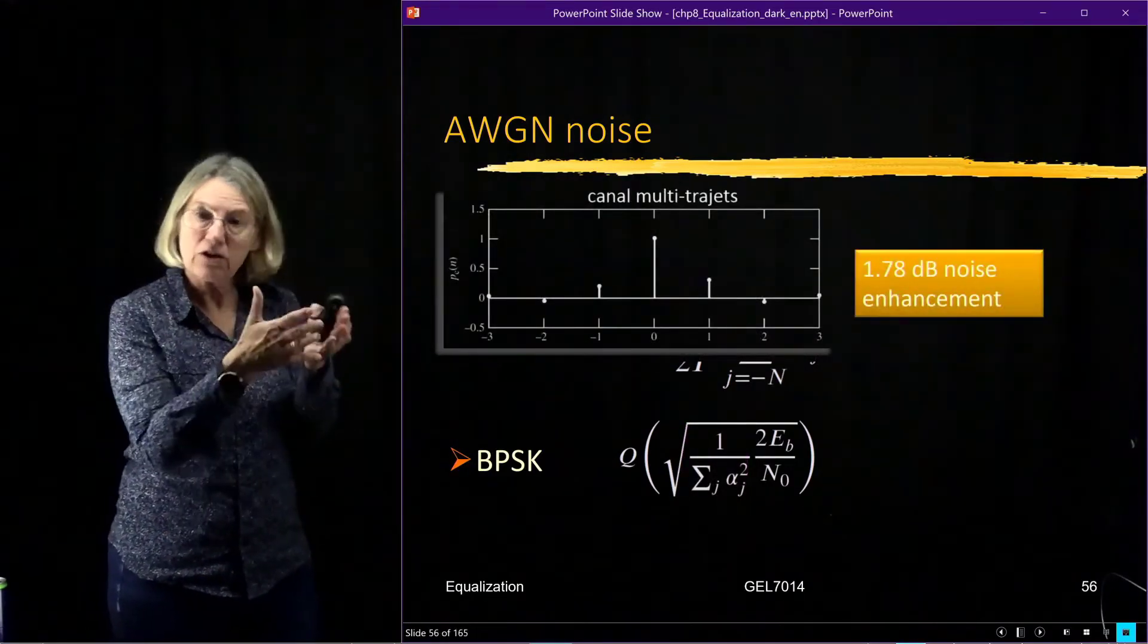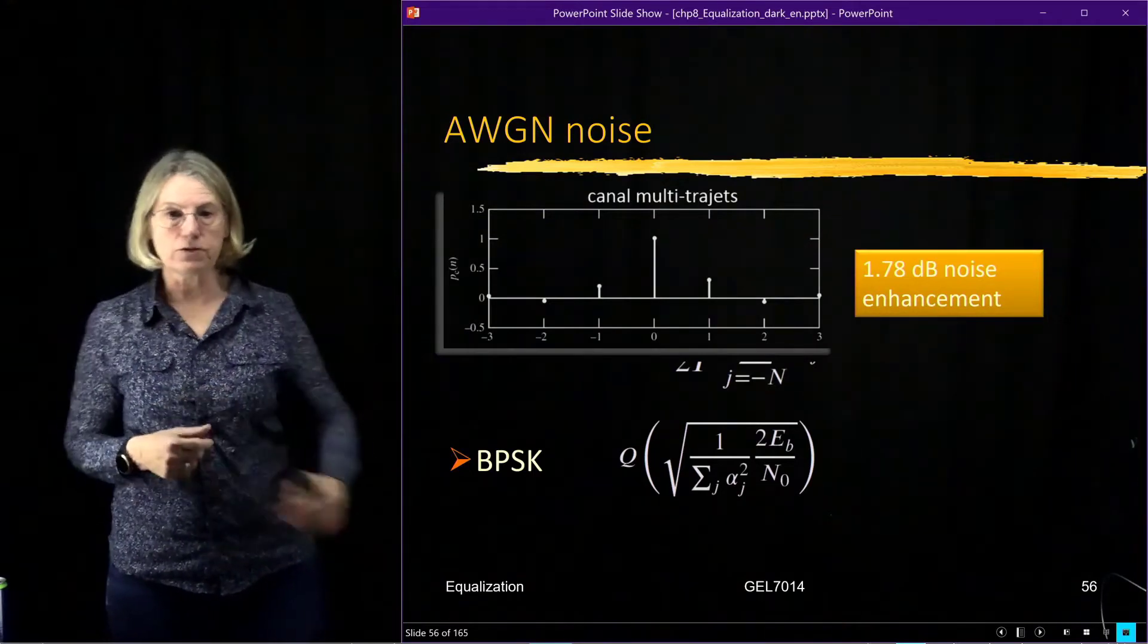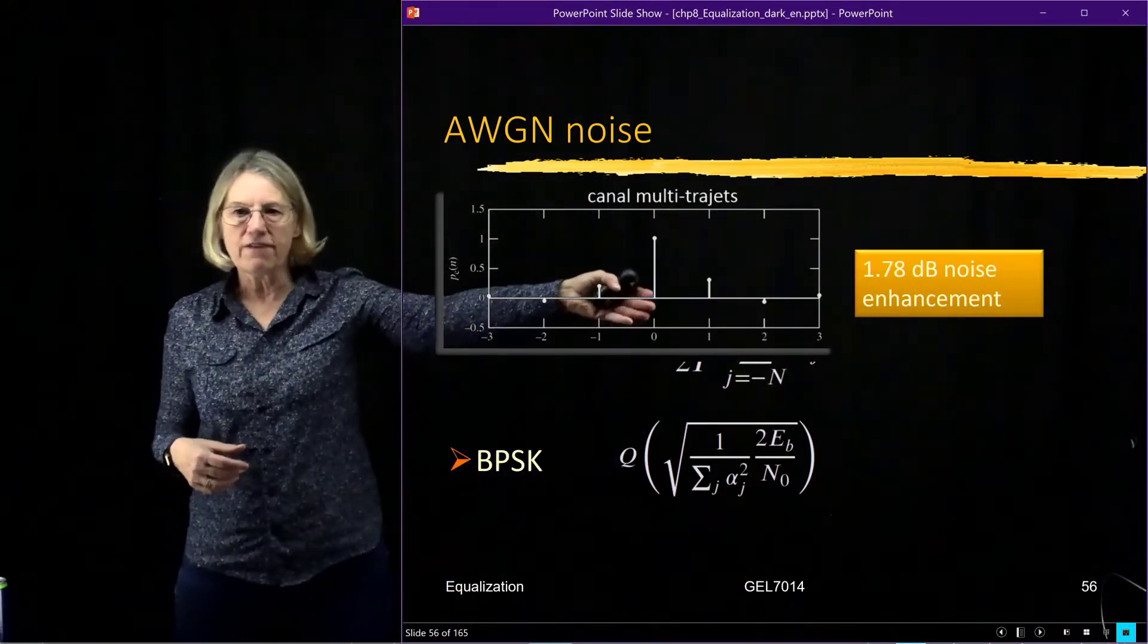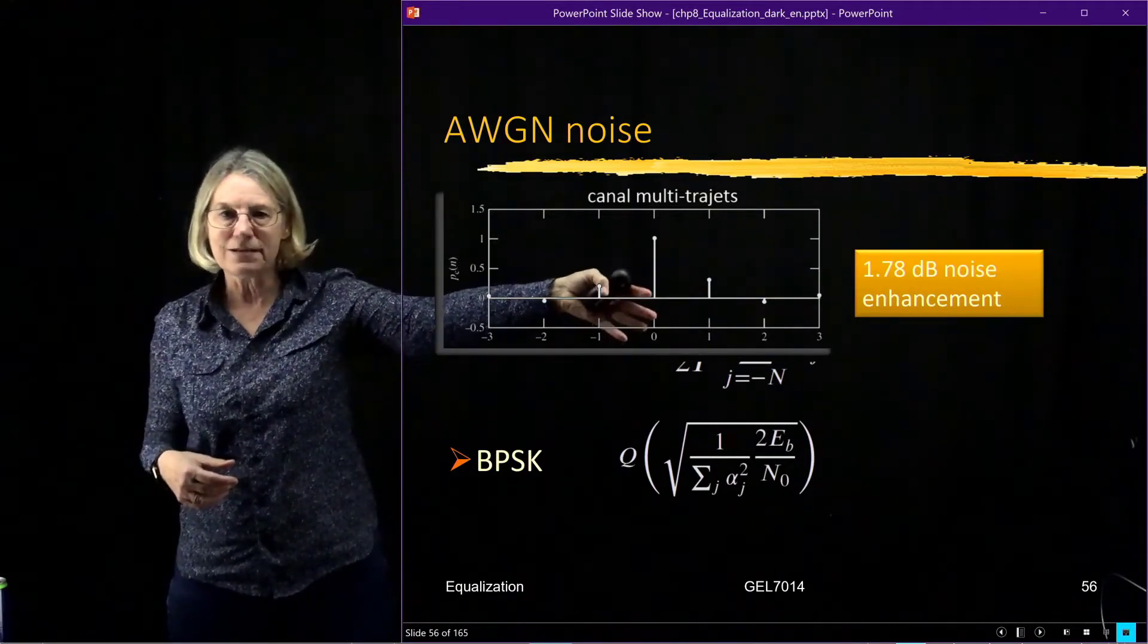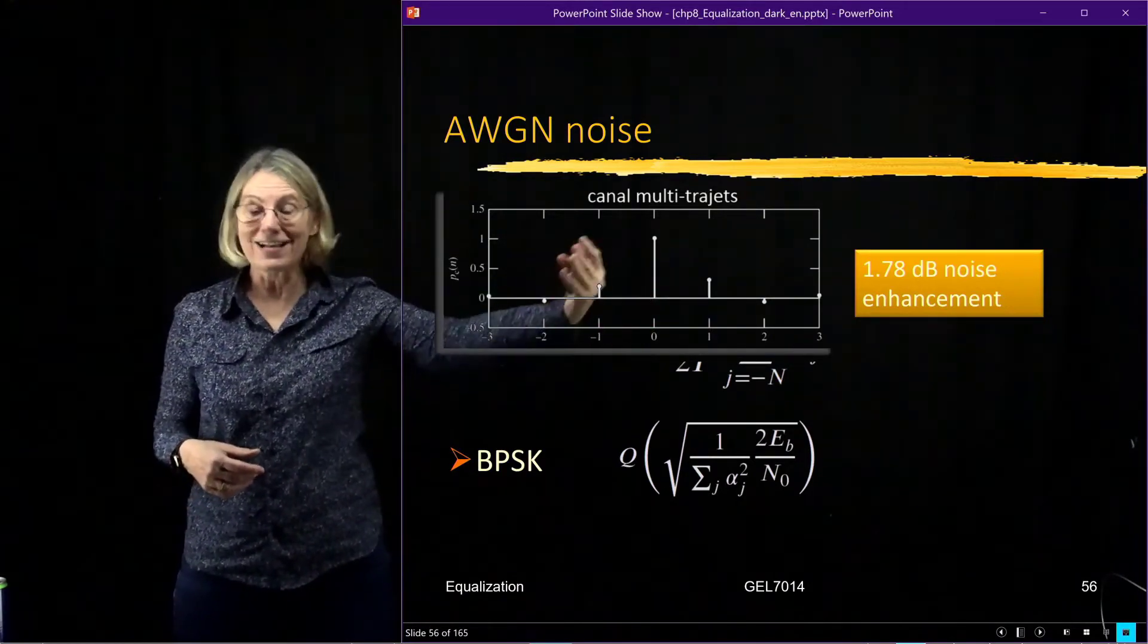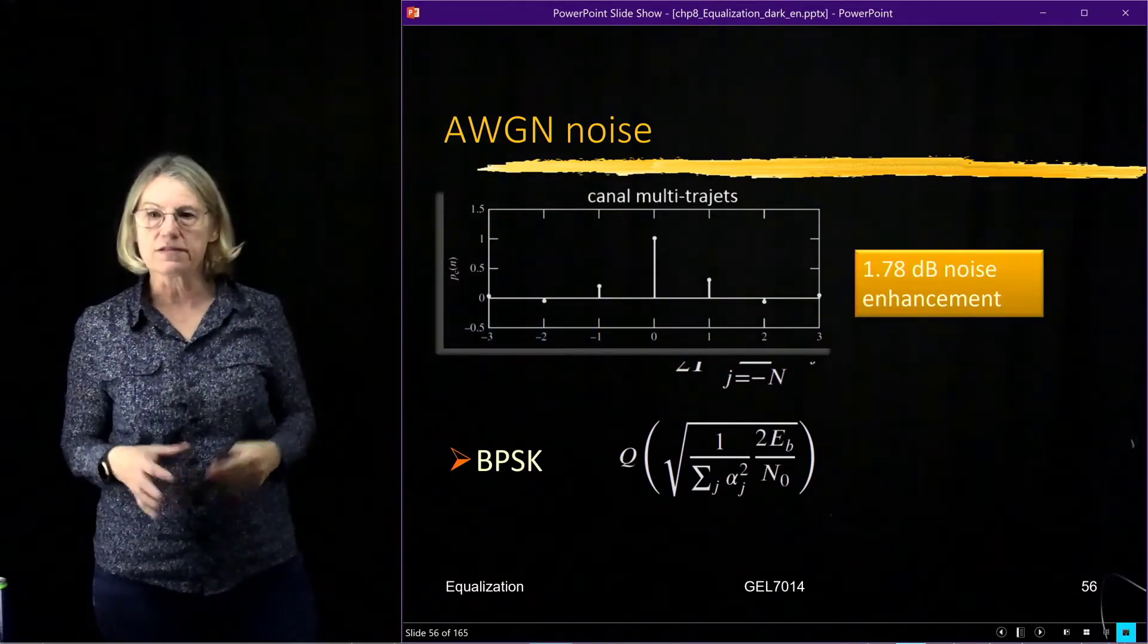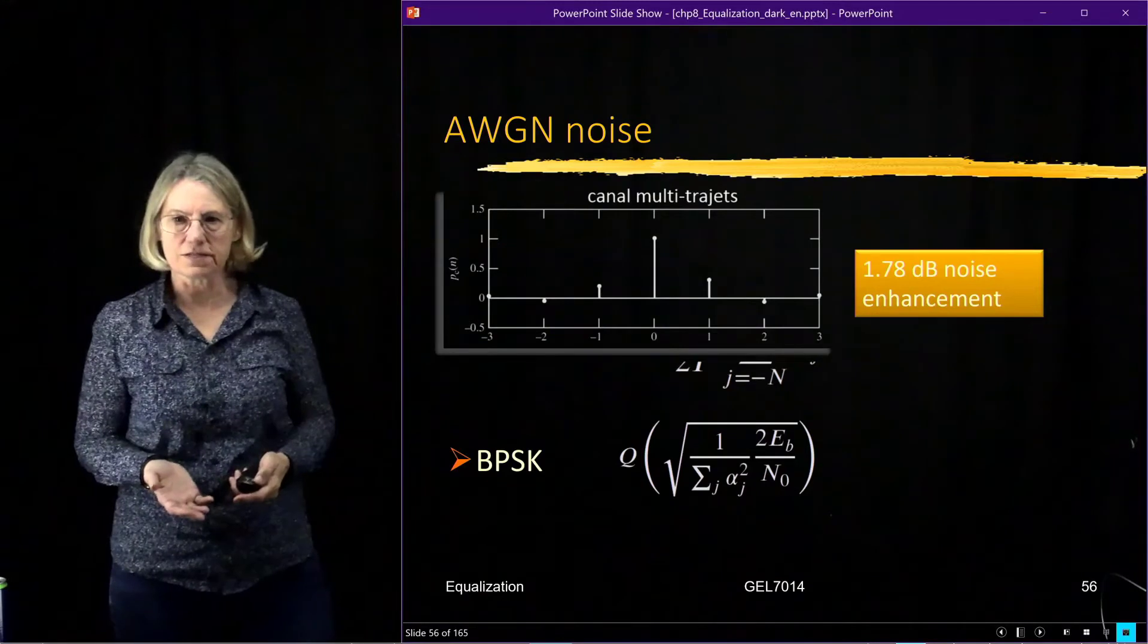So in particular if I return now to our numerical example and I do the sum over the coefficients in this one, I would arrive at a figure of 1.78 dB noise enhancement or a SNR penalty based on this system and this equalizer used to deal with this system.